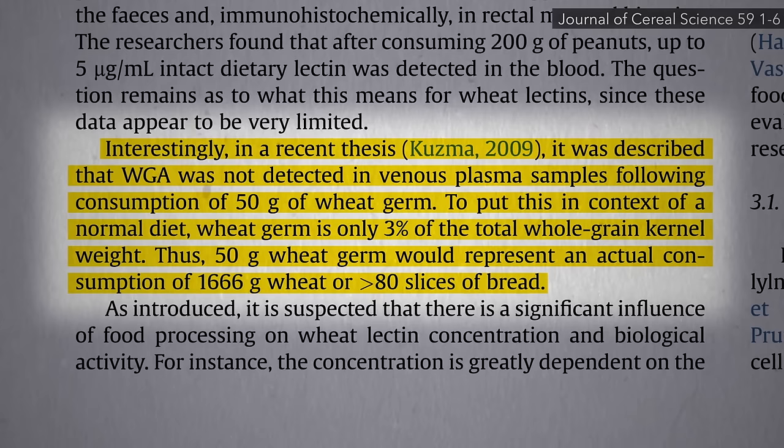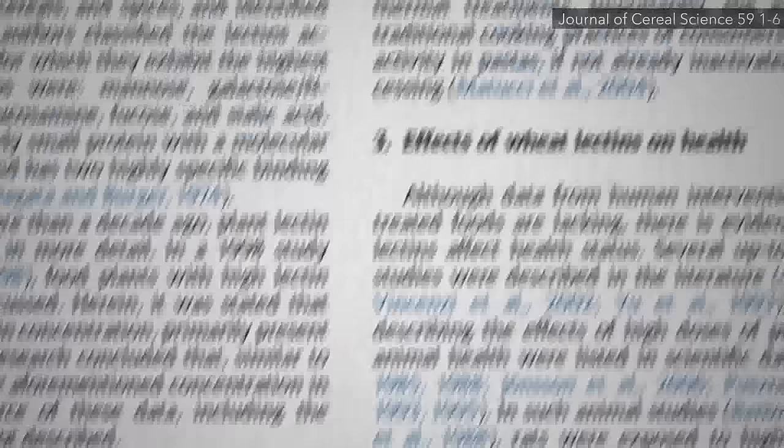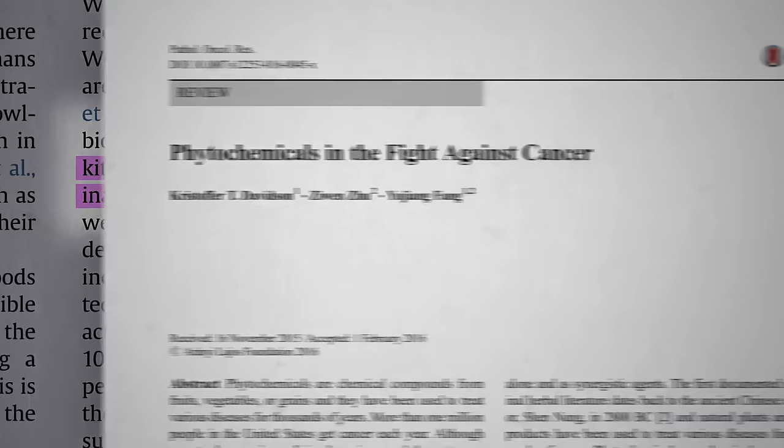The wheat lectin known as WGA, the wheat germ agglutinin, doesn't seem to make it into our bloodstream though, even after apparently eating the equivalent of more than 80 slices of bread's worth of wheat germ. And if you ate something like pasta, the boiling might wipe out the lectin in the first place anyway.